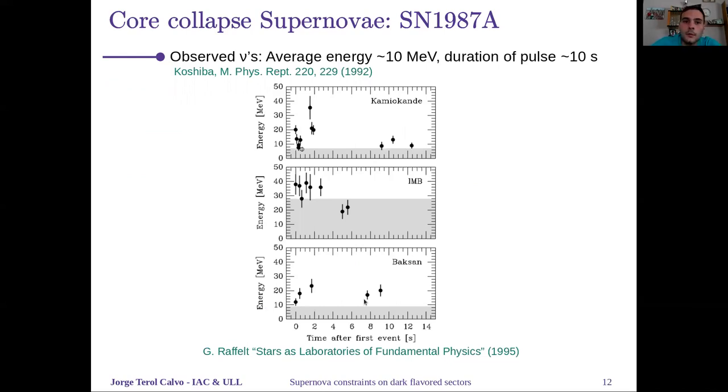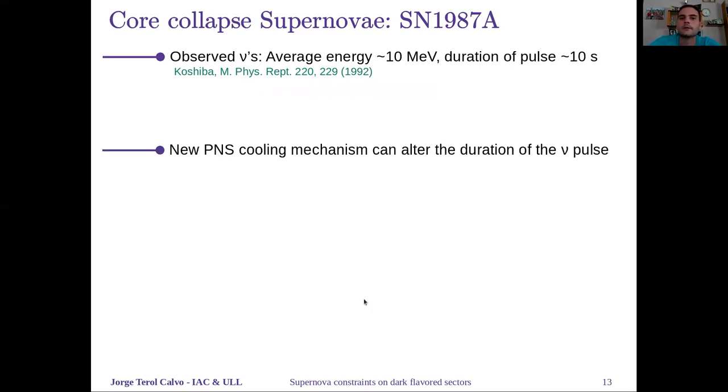The detected neutrinos had an average energy of around 10 MeV, and the duration of the pulse was around 10 seconds. We believe that this observation was a confirmation of the core collapse supernovae mechanism. This tells us that if there was another cooling mechanism for the proto neutron star, the neutrino pulse would be shorter.